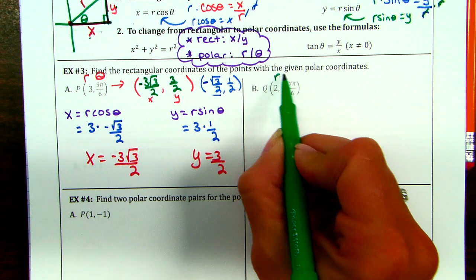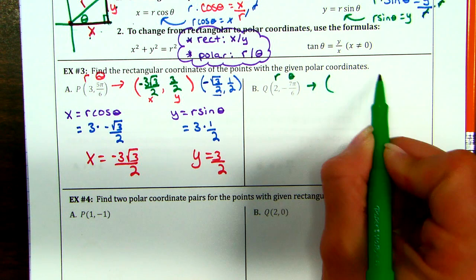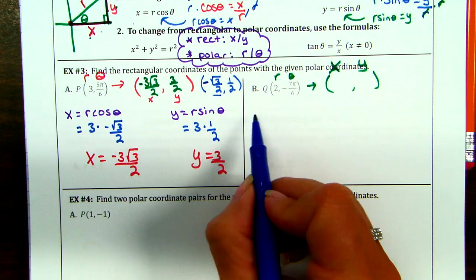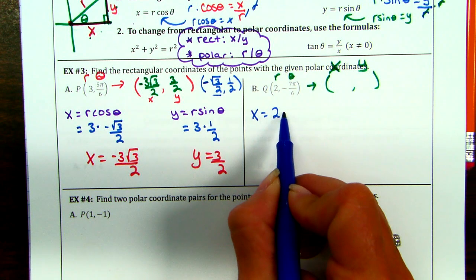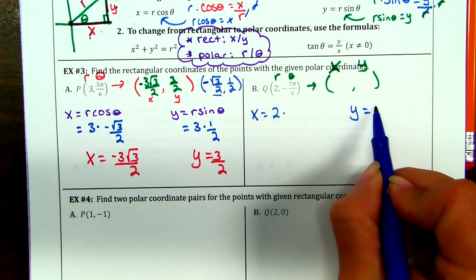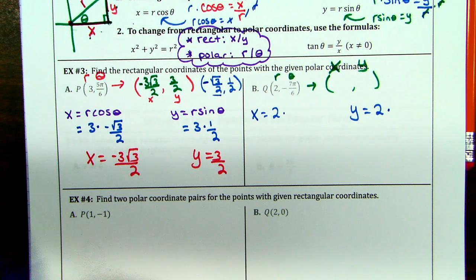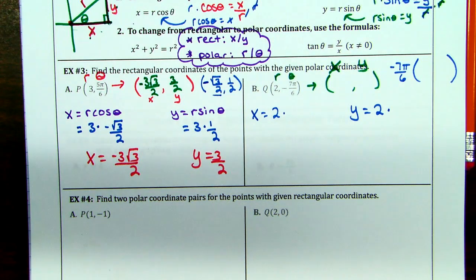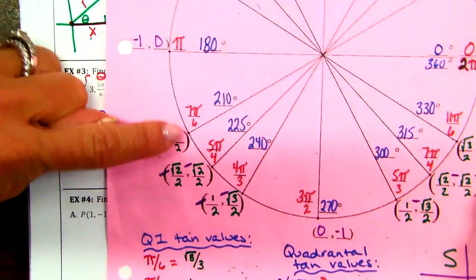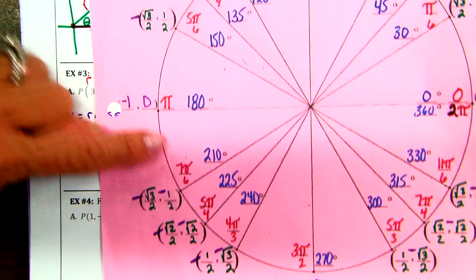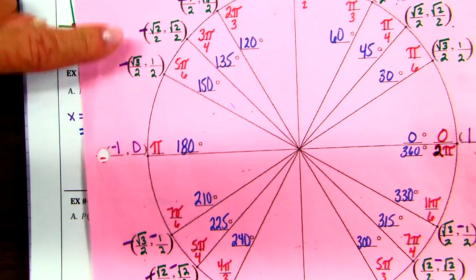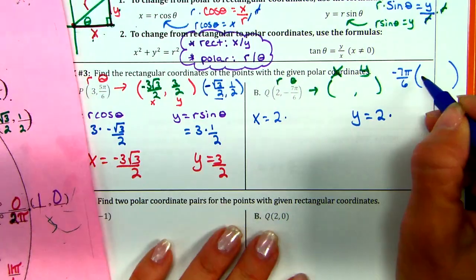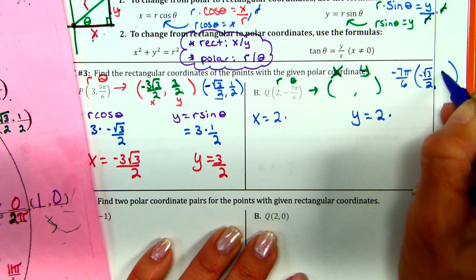Let's do another one. R and theta — we need x and y. X equals radius times cosine of negative 7 pi over 6; y equals radius times sine of negative 7 pi over 6. Positive 7 pi over 6 is right here — across the x-axis is 5 pi over 6, also known as negative 7 pi over 6. Same ordered pair we just used in the last problem.